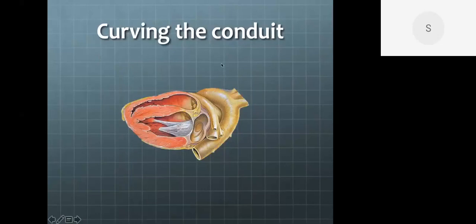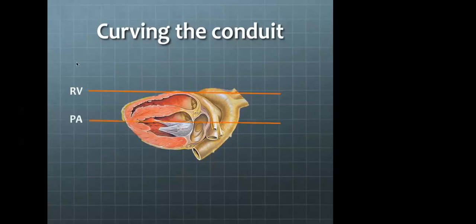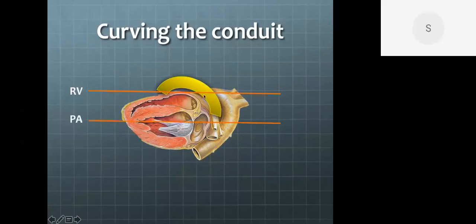The second important aspect is how to curve the conduit. When using a Dacron conduit, curvature occurs effortlessly because of the crimping. But with other materials like Gore-Tex or Contegra, there is no crimping, and excessive bending can cause kinking. The curving is important because the right ventricle and pulmonary artery are at two different levels — the pulmonary artery bifurcation lies much more posteriorly compared to the anterior wall of the right ventricle. The conduit has to take a curve: the right ventricular takeoff is horizontal and the blood flow must curve to reach the pulmonary artery. Maintaining this curvature is a very important aspect.